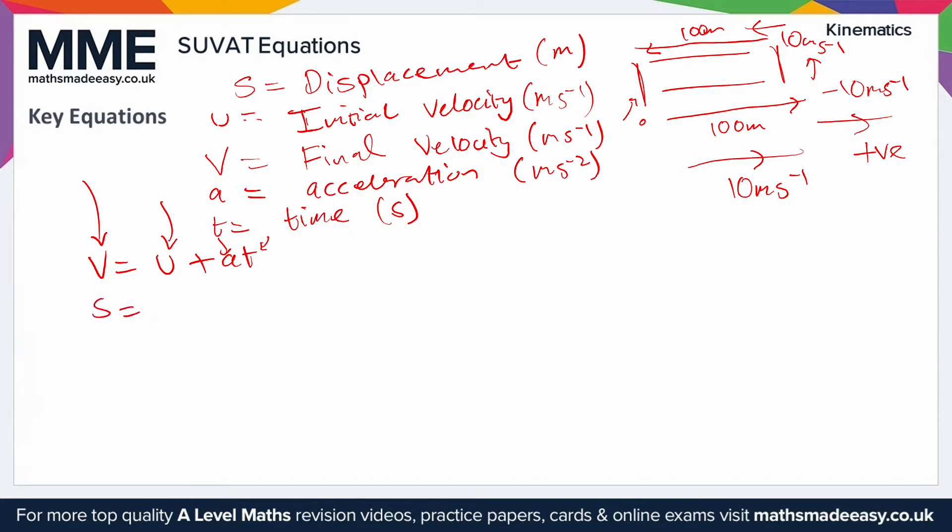Next you have S equals UT plus half AT squared. A good way of finding displacement. Of course you can rearrange these to find any of the variables within them. In a SUVAT problem you'll be given three variables and asked to find a fourth or fifth. Notice each one of these has four variables in. You'd be given three, so for example you could be given V, U, and A, and then you'd have to solve it for T. I prefer to sub in the numbers and then solve it like a linear equation.